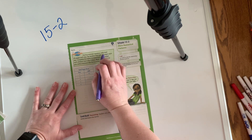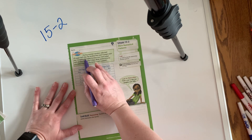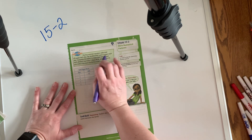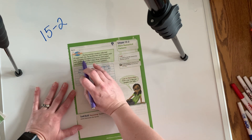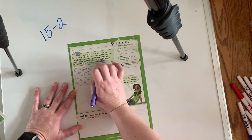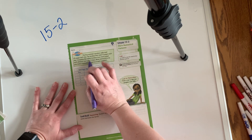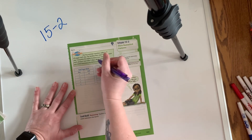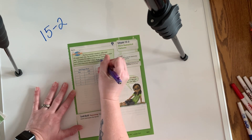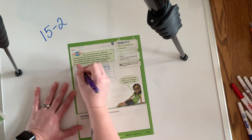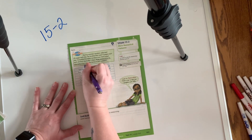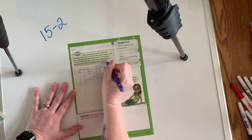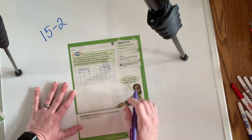The problem says: during summer vacation, Julie read 45 pages a day. Her brother Brett read 15 pages each day. We need to complete the tables to find out how many pages they read after five days. Then the next part asks: what relationship do you notice between the terms in each pattern?